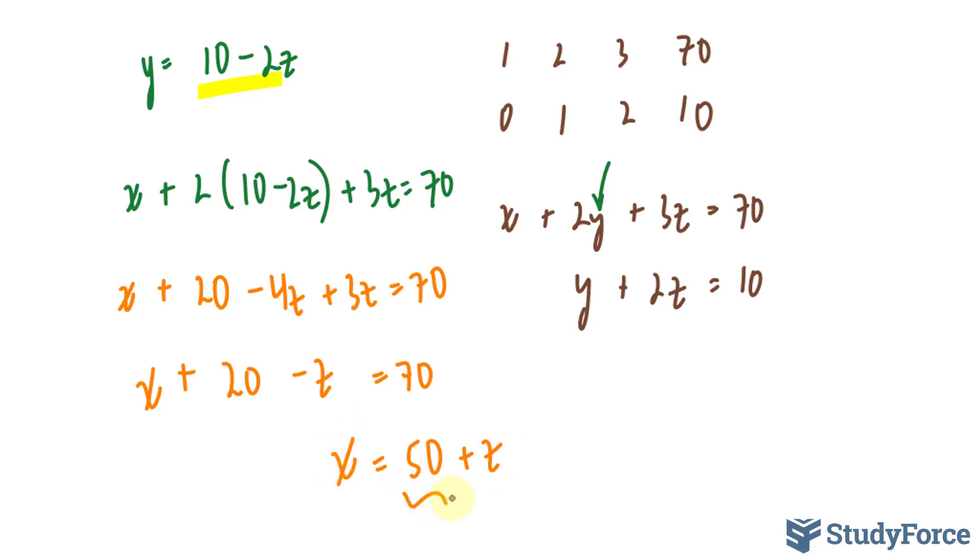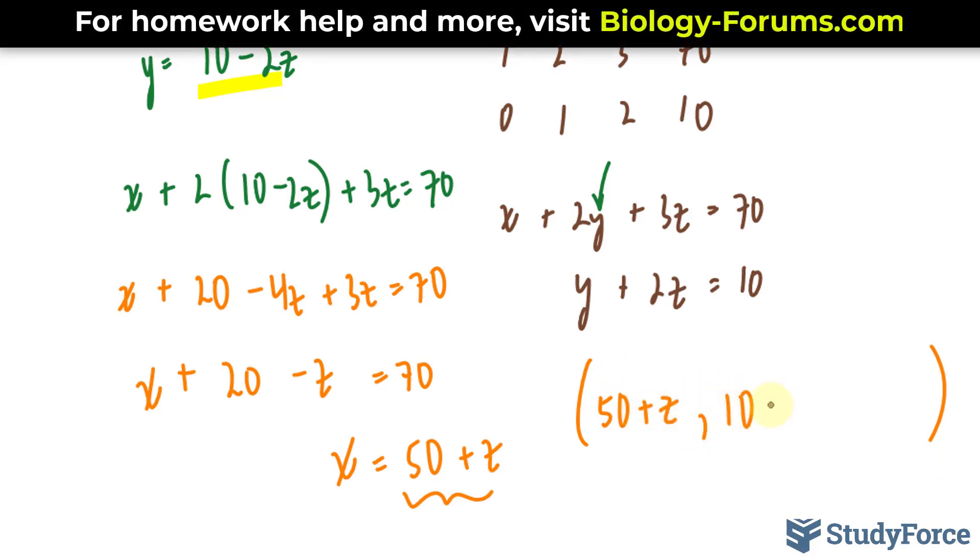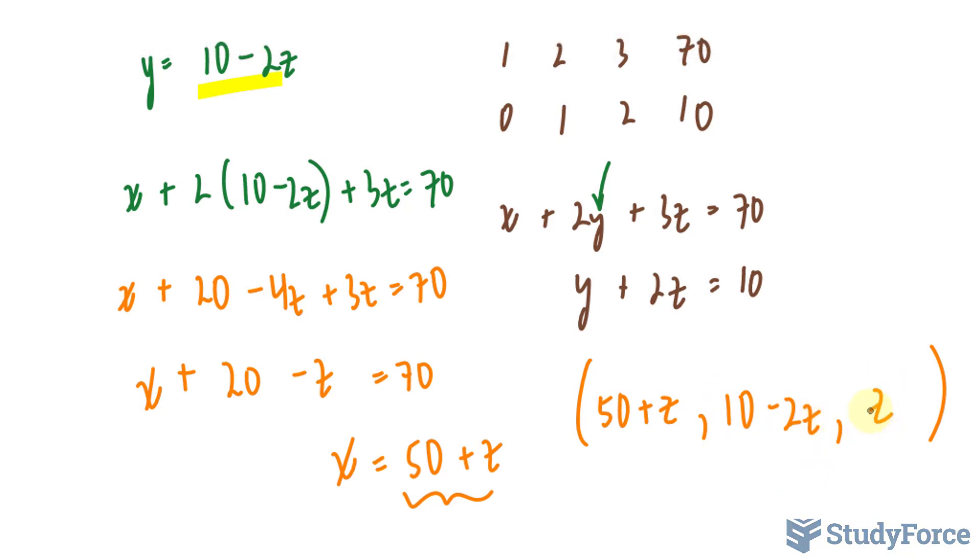So this expression is the answer for all the x coordinates of our solution set. Our solution set, therefore, will be fifty plus z. For our y coordinate, we have ten minus two z. And for our z coordinate, that will remain as z.